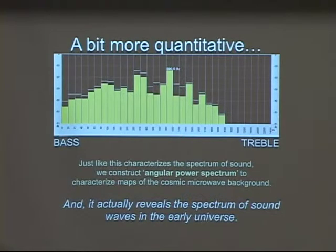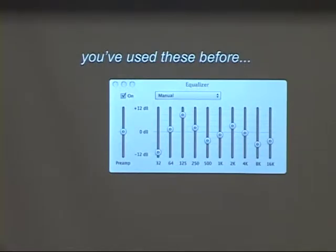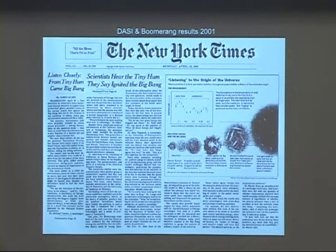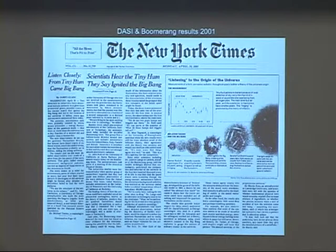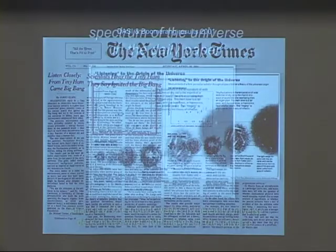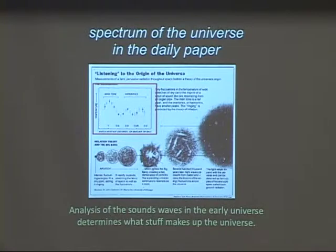The cool thing is it actually is telling us about sound waves in the early universe. The New York Times, when we first got our results, thought everyone understands spherical harmonic transforms — and put that in there. But you can see this already. This was from DASI and Boomerang — actually, just the DASI results from our experiment. This is measuring the bass notes or long wavelengths on the sky, and this was measuring short wavelengths. And there already was this funny pattern.